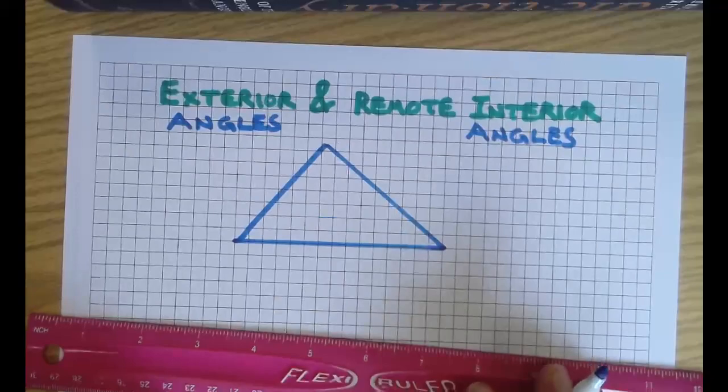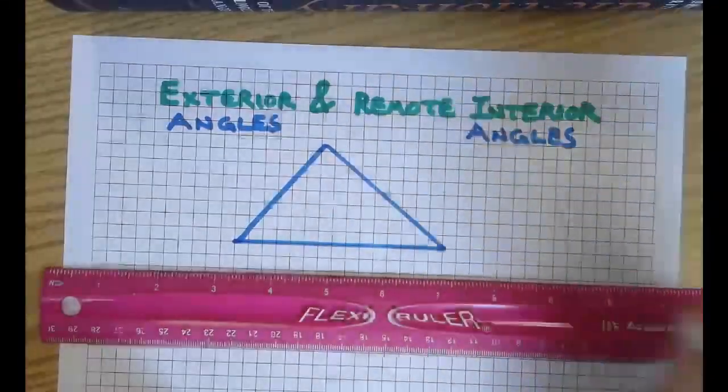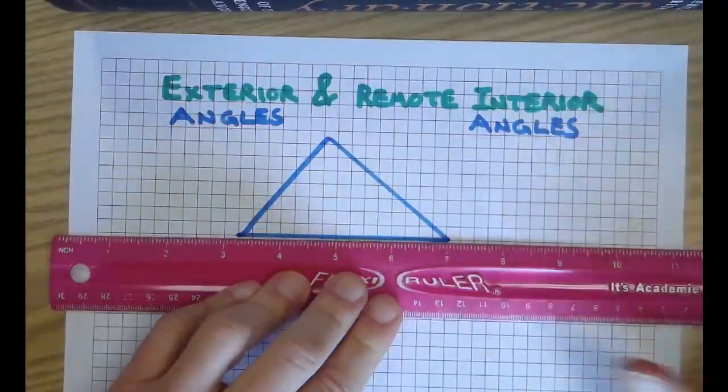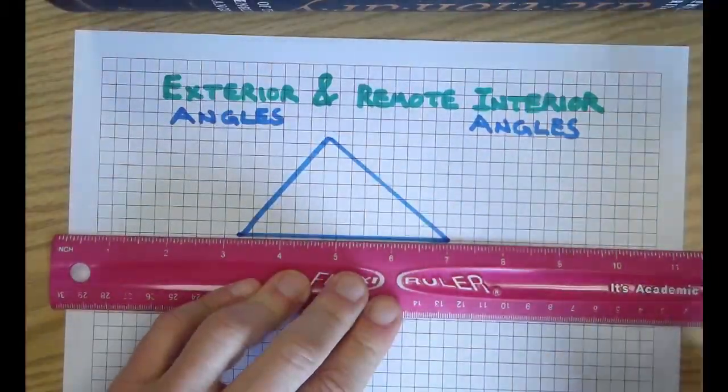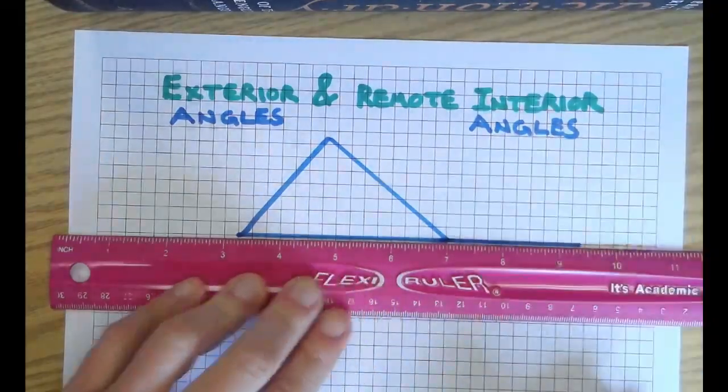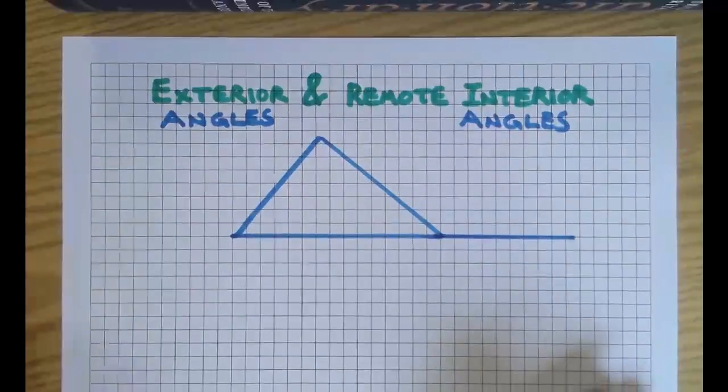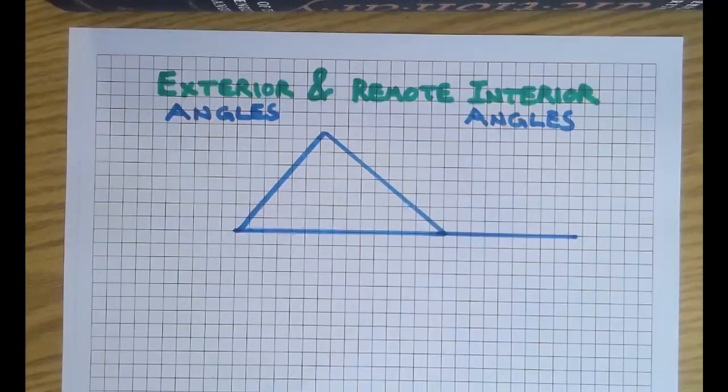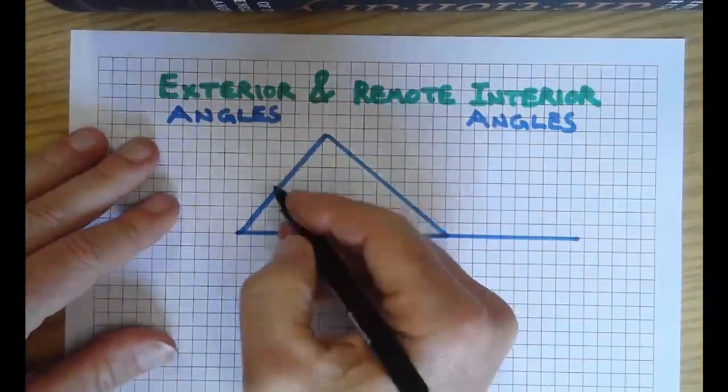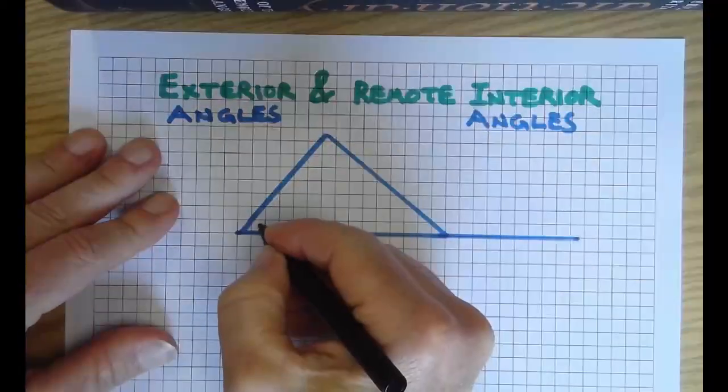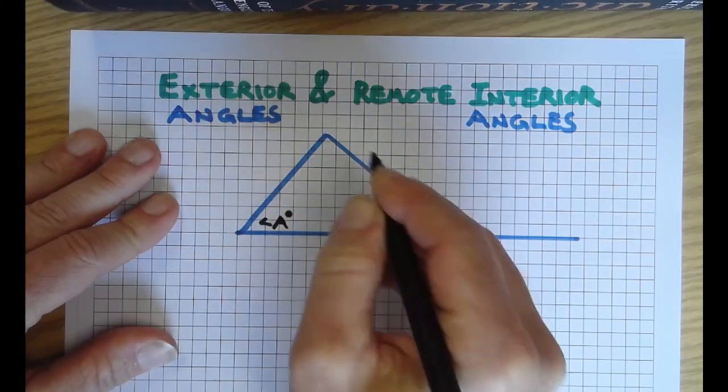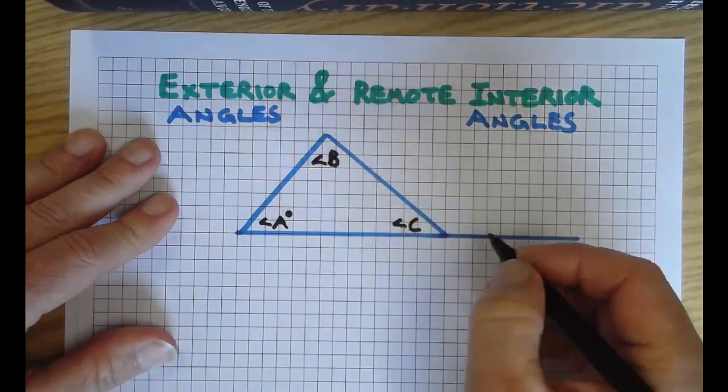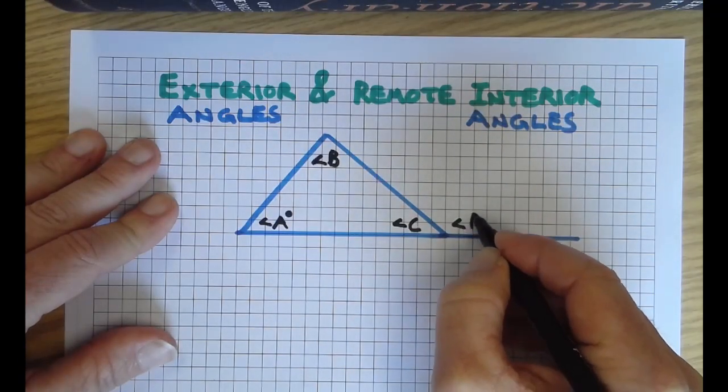Now I'm going to extend a side, one of the sides. I'm going to choose this one. You can choose any side you want, but I just want to make it fit on this screen and paper. So I'm going to go ahead and label these angles: angle A, angle B, and angle C. And I'm going to label this one angle D.